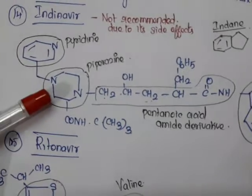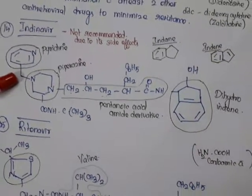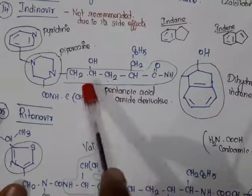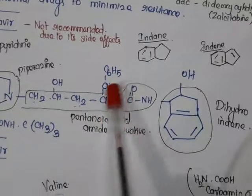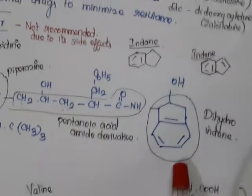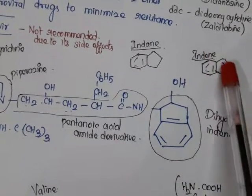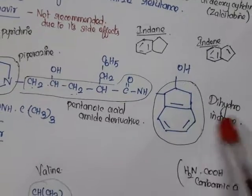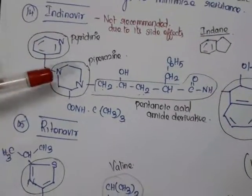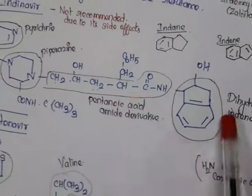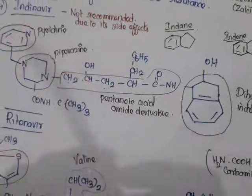In indinavir's structure we have pyridine and piperazine connected by a methylene bridge. There is a pentanoic acid amide derivative — a five-carbon acid amide — with a benzyl group at the second carbon. We also have dihydroindane: indane is benzene fused with a five-membered saturated ring; indene has one double bond, so adding two hydrogens gives dihydroindane. Indinavir is currently not recommended due to its side effects.